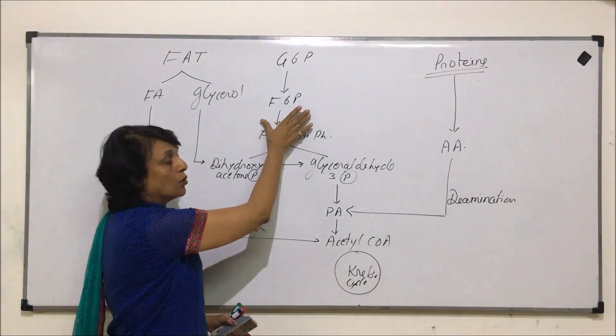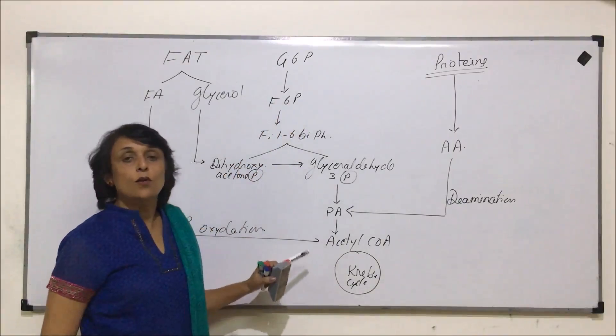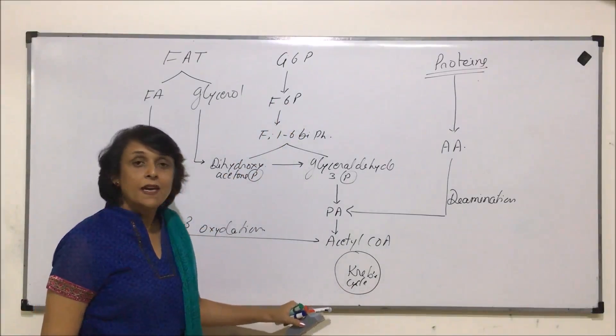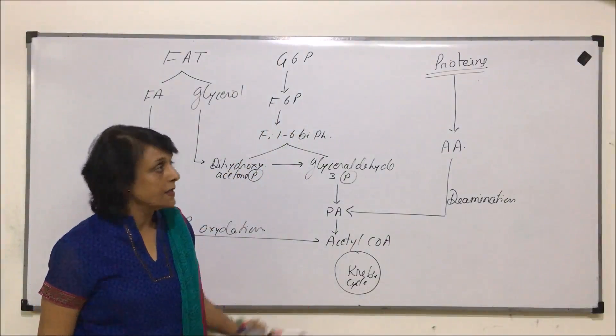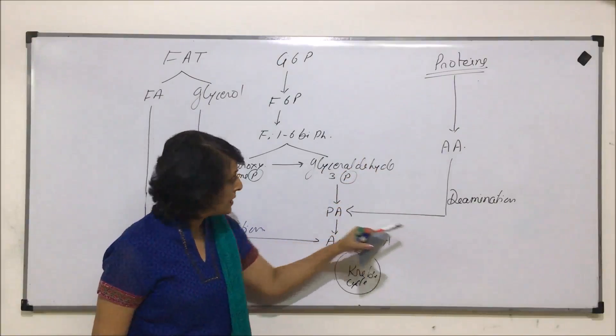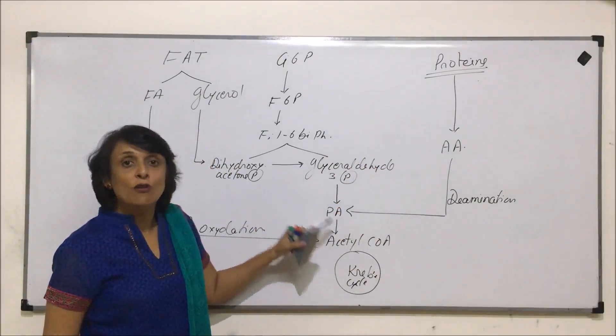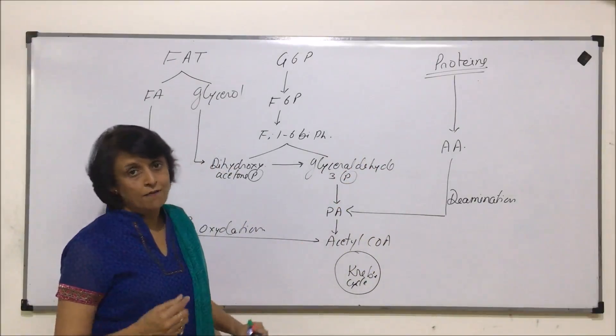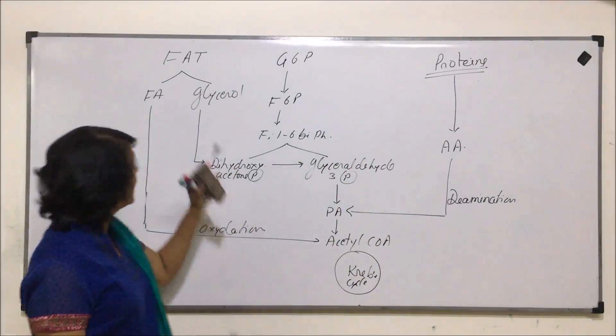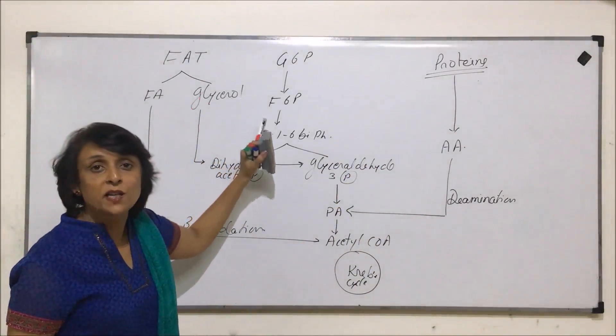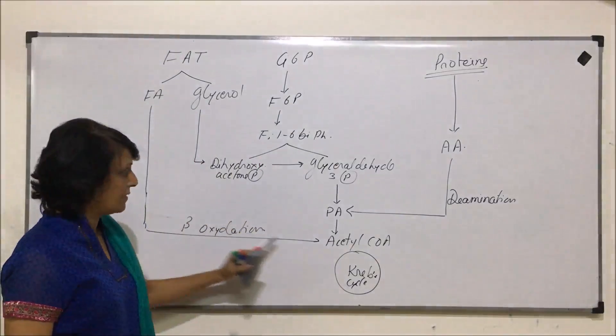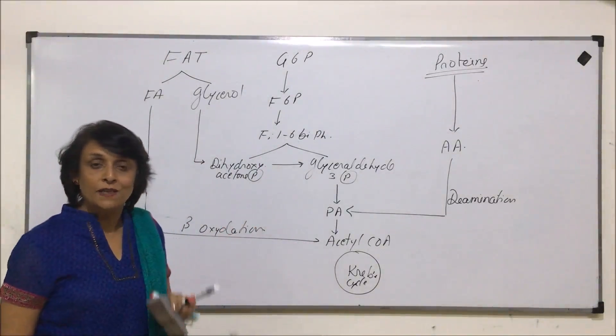So if it is carbohydrate undergoing aerobic breakdown, we get 36 ATPs. And if it is proteins, depending upon how many amino acids are released, we need to count the number of ATPs. If it is fat, depending upon mono, di or triglyceride fat, again we need to count the number of ATPs.